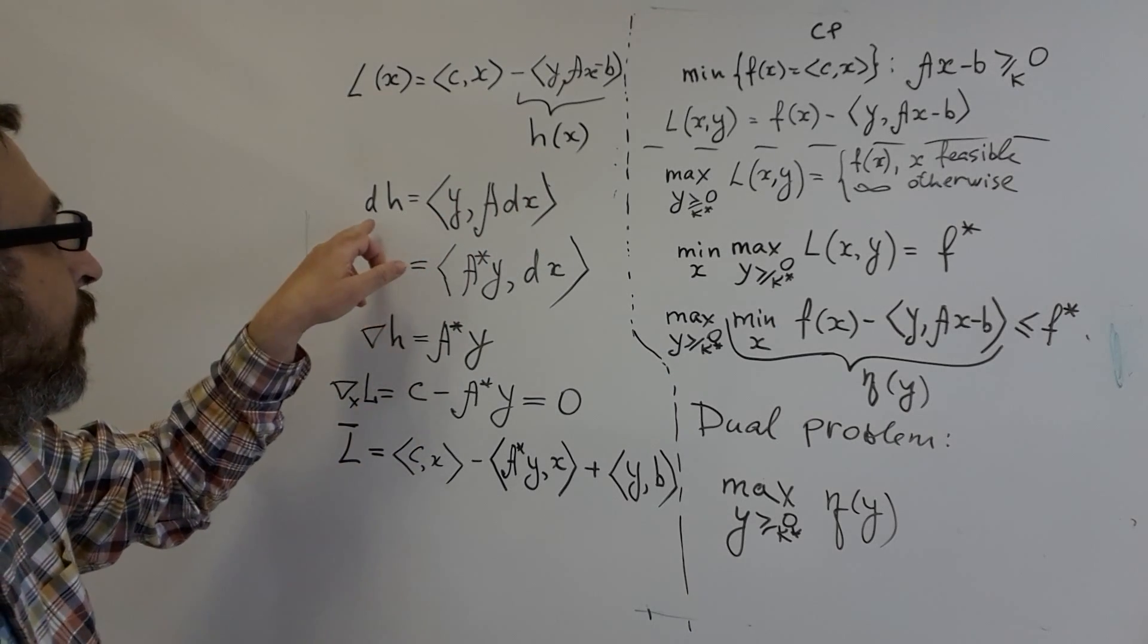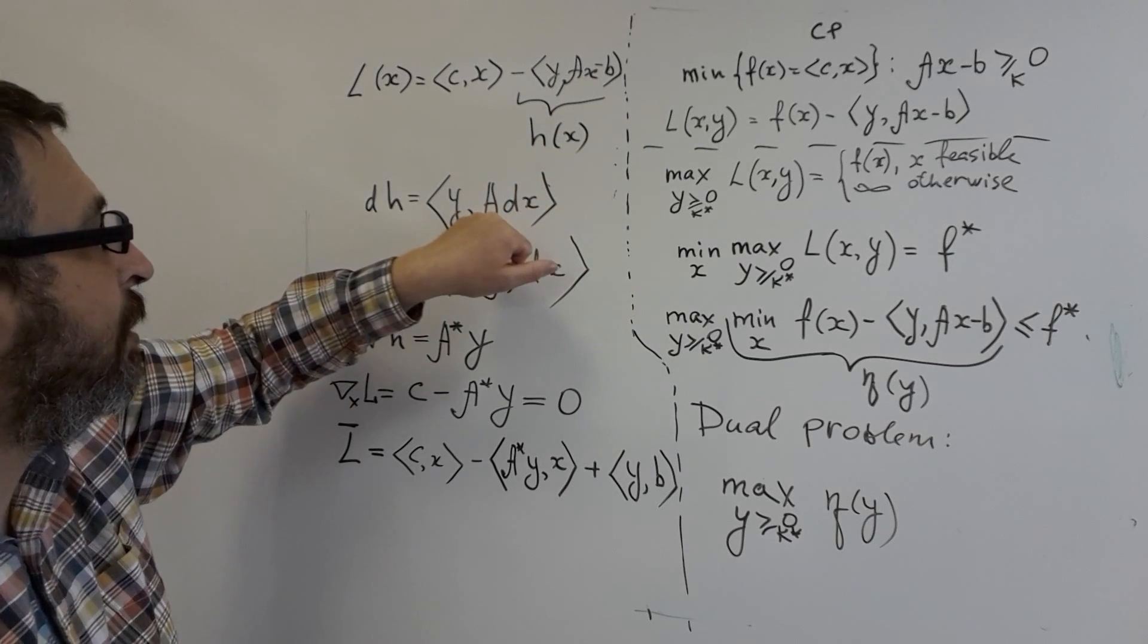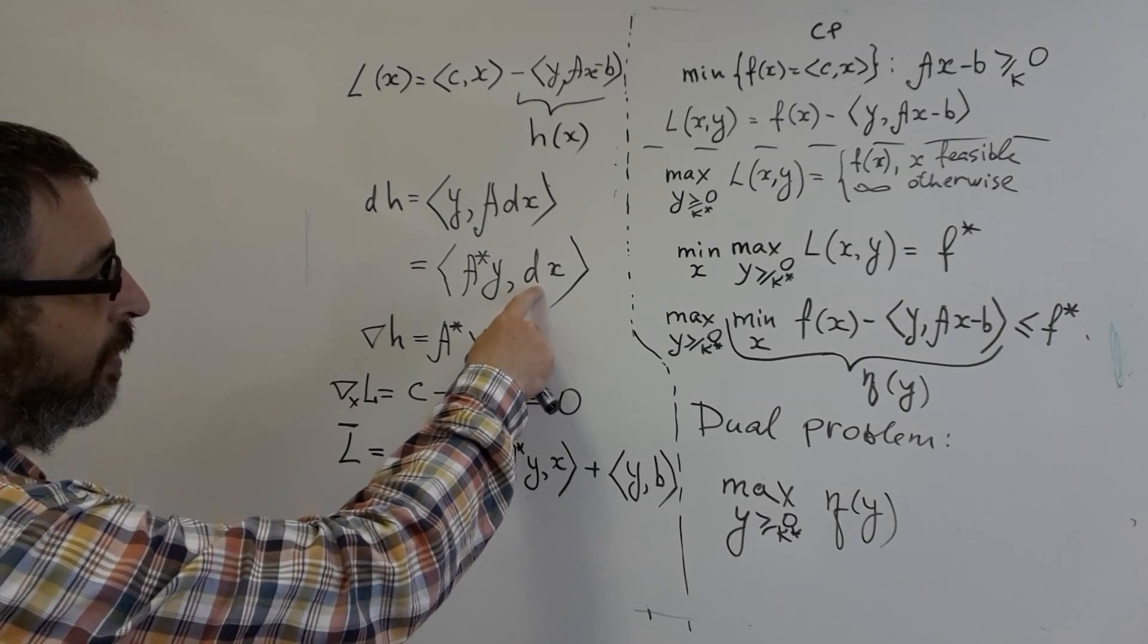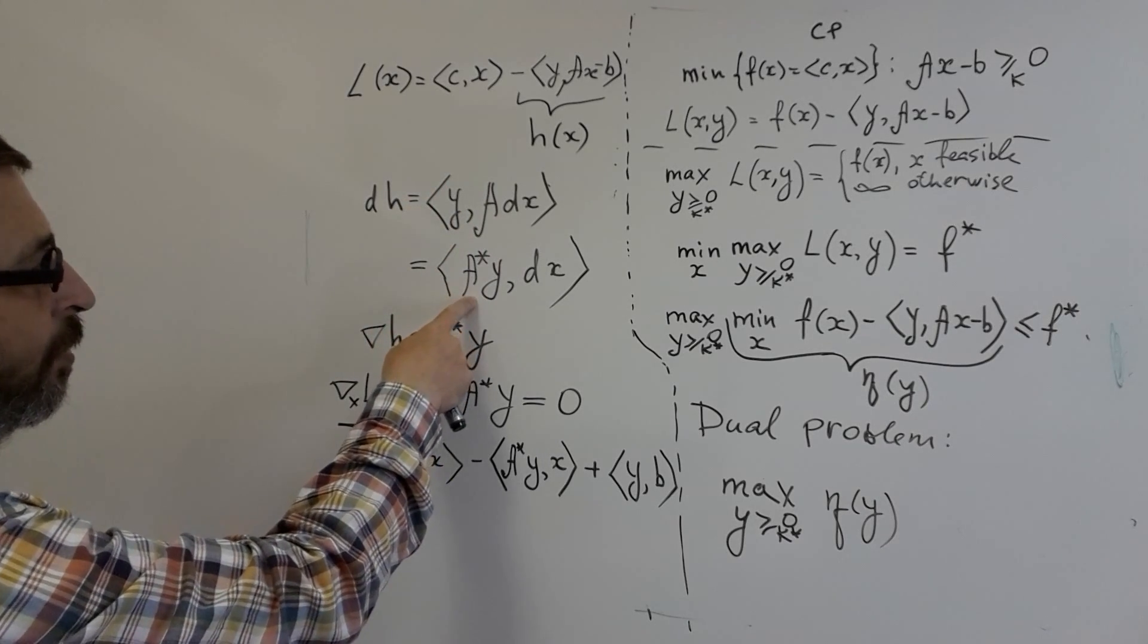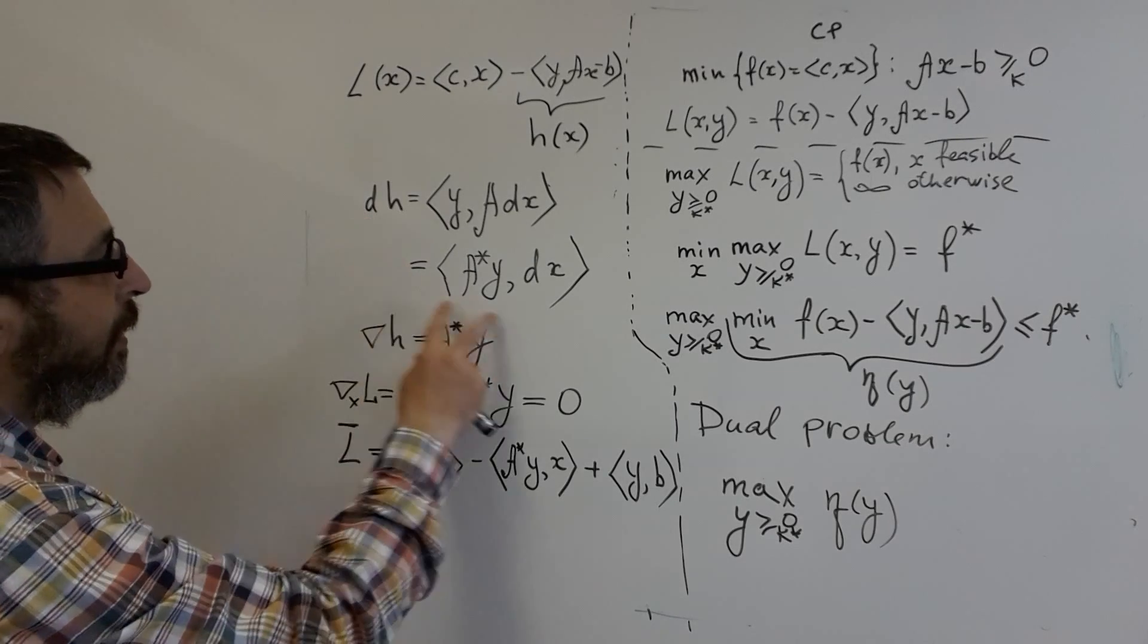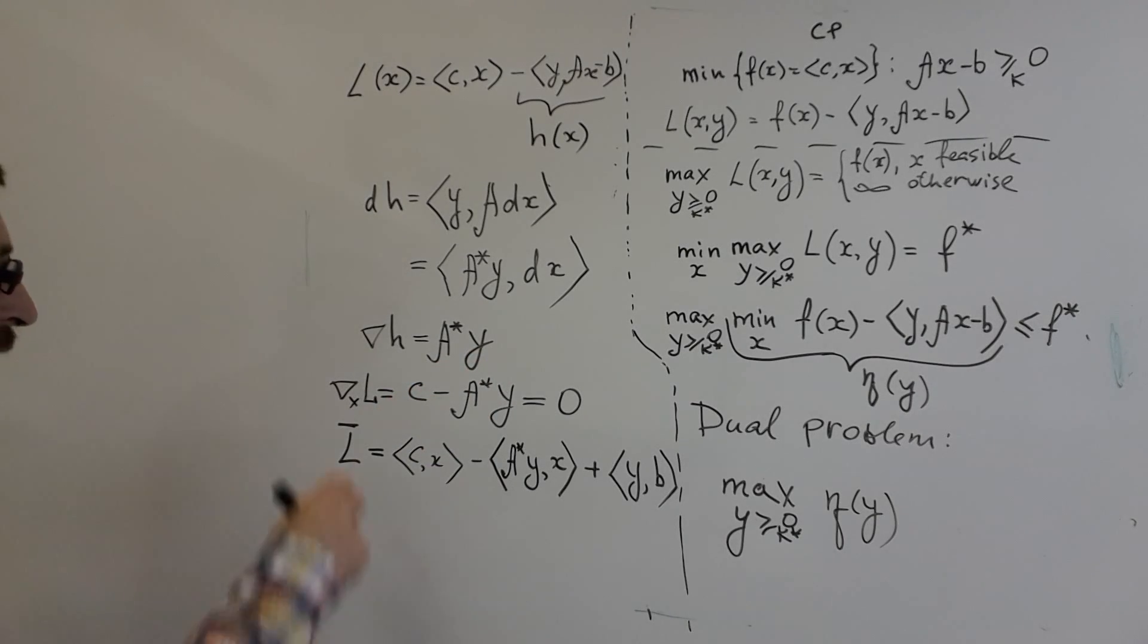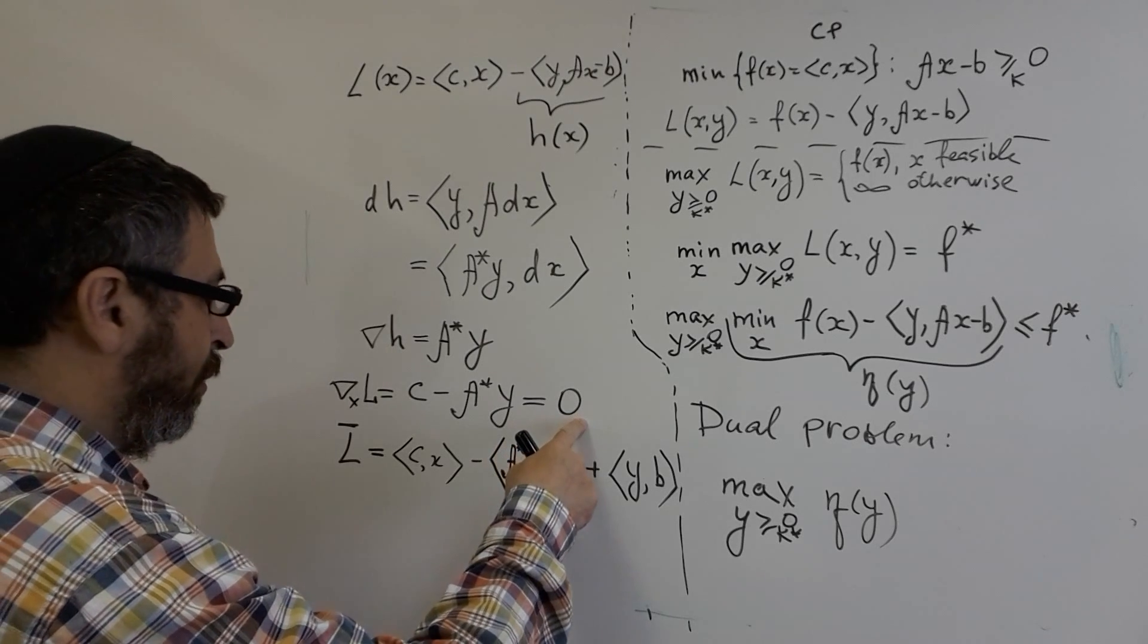To find gradient, we find differential of h given differential of x. So this linear expression, its differential is just calligraphic A multiplied by dx, and the remaining part stays as it was. Our goal is to get dx alone in the inner product, so we just move operator on the other part of inner product using its adjoint. It's by definition of adjoint operator. So we have dh, it's something inner product with dx, and we know by definition of gradient, something is gradient of h. So gradient of h is just A adjoint multiplied by y. And gradient of whole Lagrangian with respect to x is c minus A adjoint y, and we should equate it to zero.